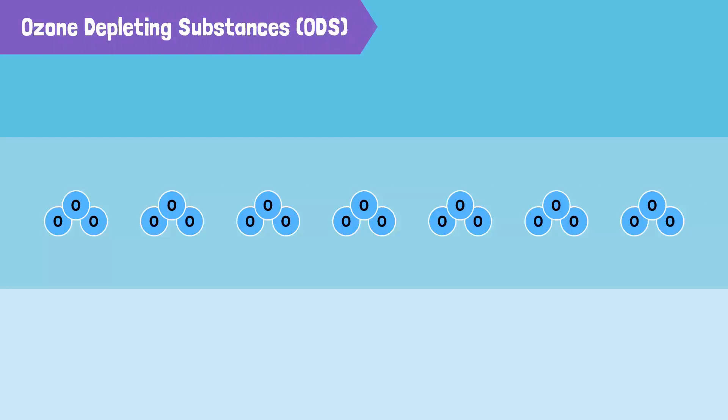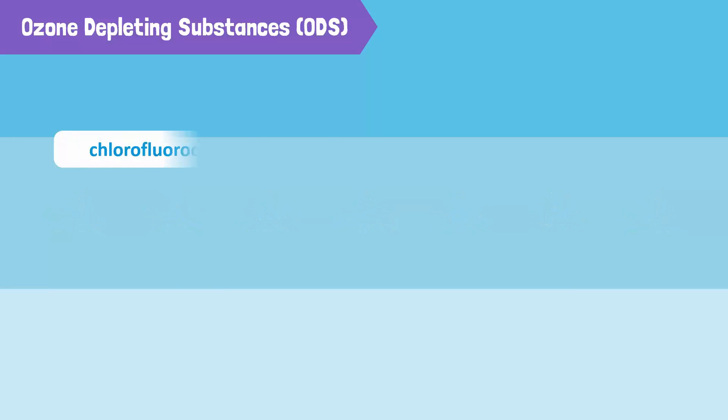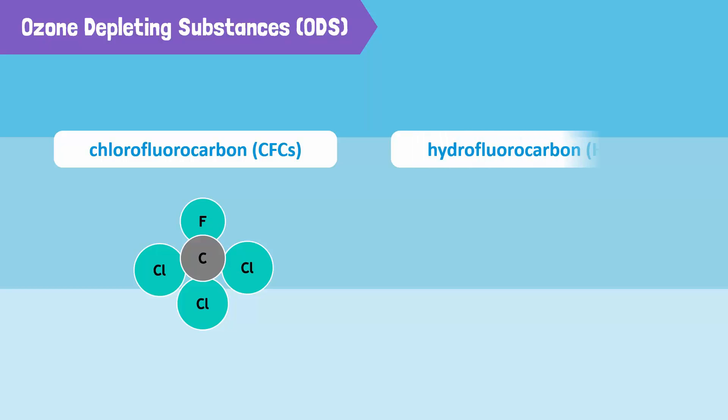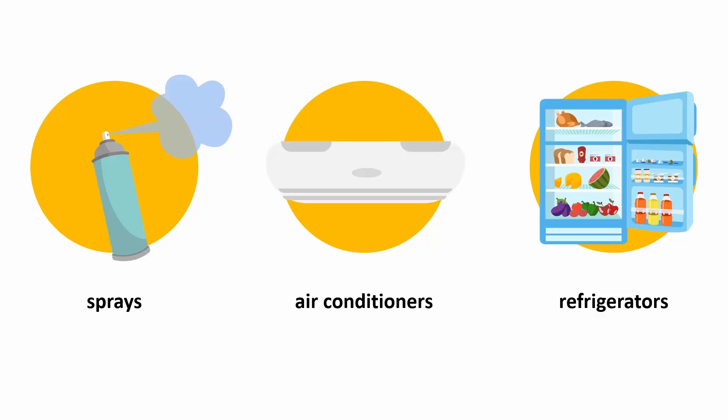The depletion of the ozone layer is mainly caused by chemicals such as chlorofluorocarbons, or CFCs, hydrofluorocarbons, and other ozone-depleting substances. These chemicals are mostly found in sprays, refrigerants used in air conditioners and refrigerators, and plastic products.